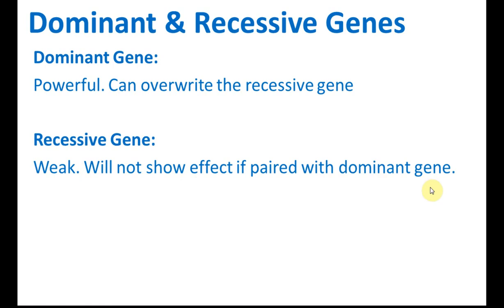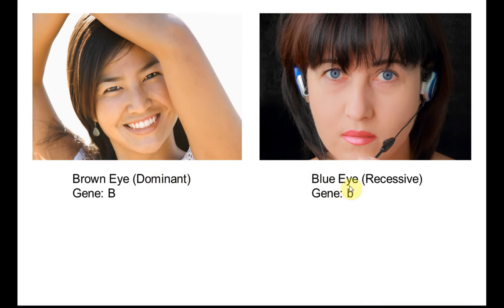So what does this mean? Let's say brown eye and blue eye. Brown eye is dominant and blue eye is recessive. We label the genes of brown eye with a capital letter B and the recessive gene with a small letter b.